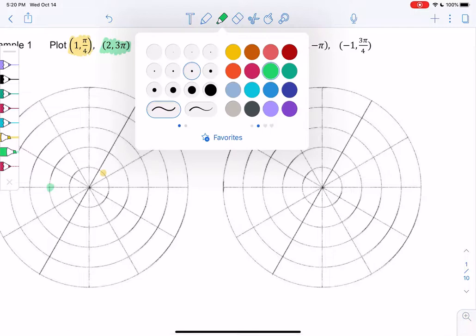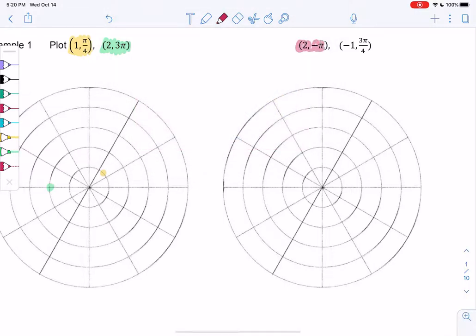Let's try (2, -π). For negative π, we go clockwise, then go out to 2, and we end up right there.